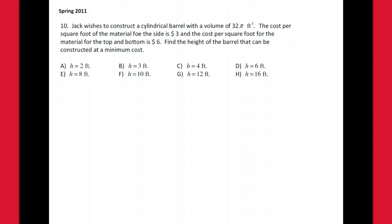Okay, spring 2011 number 10. This is an optimization question based off of a cylindrical barrel. So we need a cylinder, and the cylinder has a top and a bottom. The top and the bottom cost different than the sides. We have this radius r, we have a height h, and the volume is set.